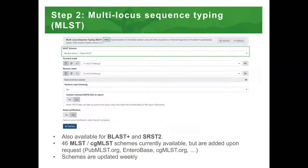Secondly, we perform MLST typing with our custom MLST tool. It performs allele detection using KMA, but we also offer the same functionality with BLAST-based and ARIBA-based detection. Currently, we offer 46 MLST and cgMLST schemes, but novel schemes are added upon request. All of these databases are updated automatically every weekend.